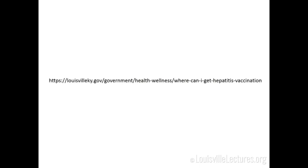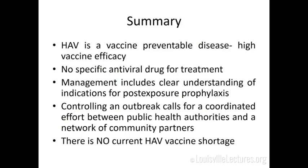A resource link details where to get the hepatitis A vaccine — by insurance status and age — because providers will be getting calls. The key takeaway is there is no shortage of vaccine. Have patients call their insurance first, since coverage may differ between office and pharmacy settings. In summary: this is a preventable disease with high vaccine efficacy. There is no specific antiviral for treatment. Understand the indications for post-exposure prophylaxis and work with infection prevention, the health department, and hospital epidemiology. Controlling an outbreak requires a highly coordinated effort between public health authorities and community partners.